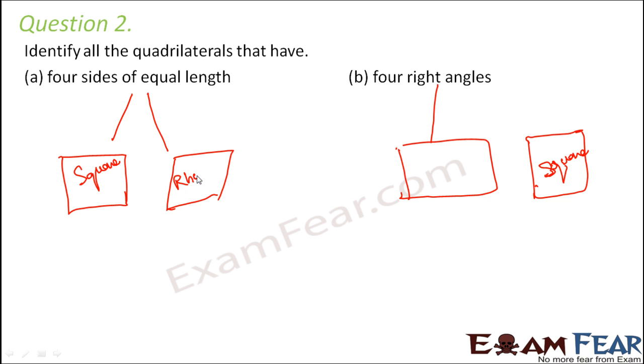In rhombus also we have four sides equal, but in this case the angles are not equal. Now when you talk about four right angles, one could be square, the other could be rectangle, where all the angles are right angles but their sides are not equal.